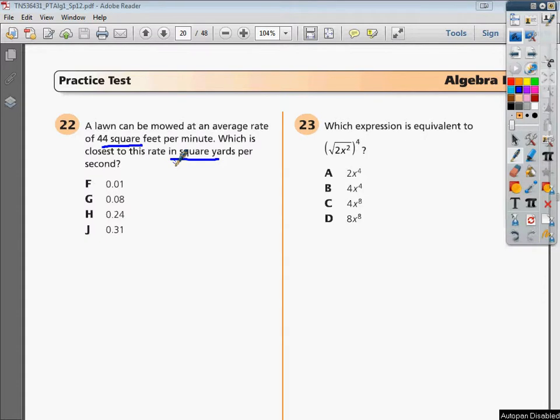So I'm starting out with 44 square feet per second. My goal is to get to square yard, or sorry, I'm in square feet per minute, my bad. I was reading it wrong. Square feet per minute. So 44 feet squared in one minute, and then I have to convert it to square yards per second.